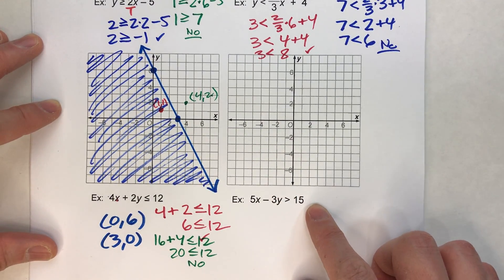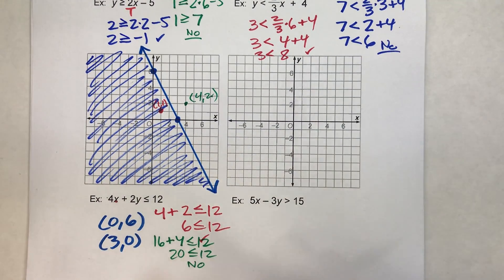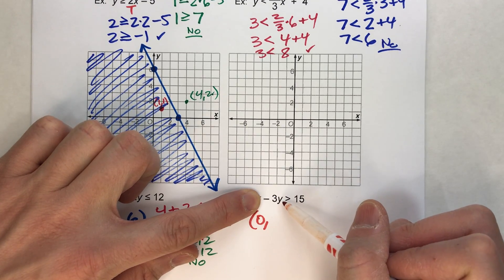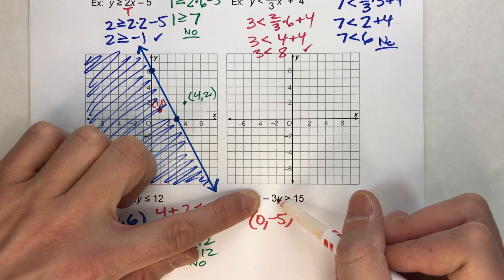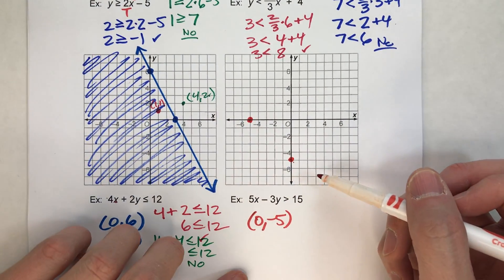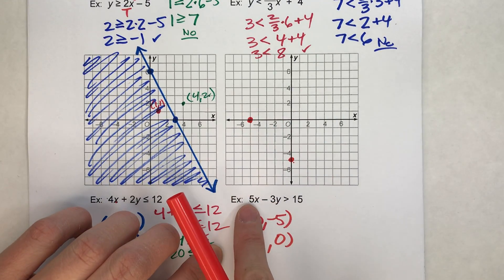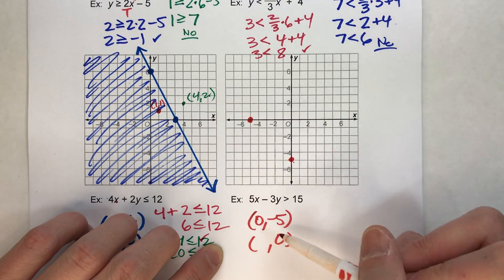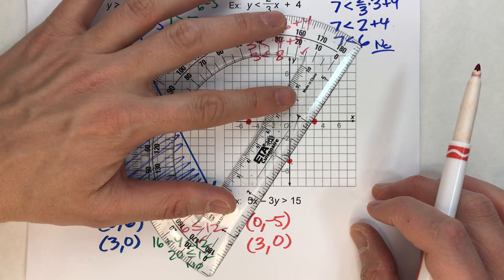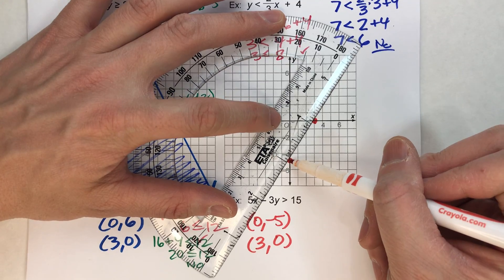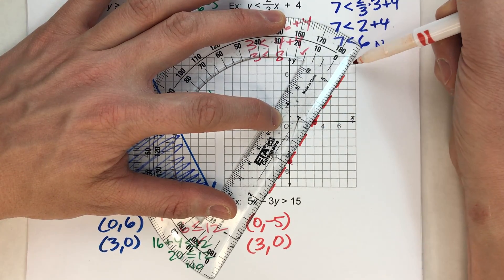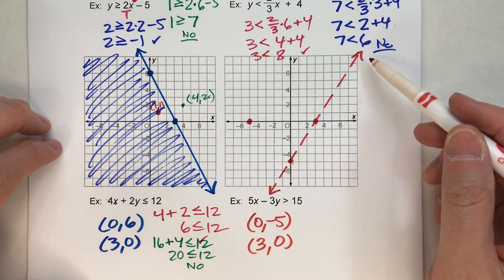Last one: 5x minus 3y is greater than 15. Notice — greater than, not greater than or equal to. Just greater than. So this is going to be a dashed line. I'm going to find my intercepts to graph this. If x is 0, y would have to be negative 5, because negative 3 times negative 5 equals 15. So 0, negative 5 is one point. Now let's make y equal to 0 — what does x have to be so that 5x equals 15? It would be 3. So the point 3, 0 is on the line. This is our boundary line, drawn as a dashed line because points on the line are not a solution.